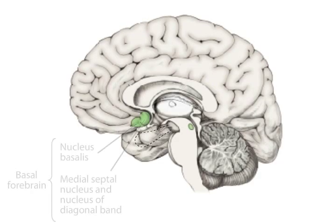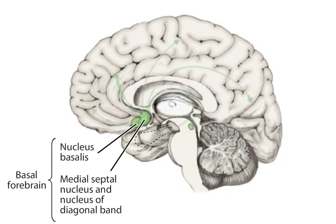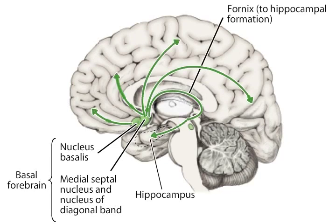In the brain, several distinct clusters of cholinergic cells are present. The basal forebrain includes major groups of cholinergic cells in the medial septal nucleus, the nucleus of the diagonal band, and the nucleus basalis. These cholinergic cells project to the hippocampus and amygdala as well as throughout the cerebral cortex.